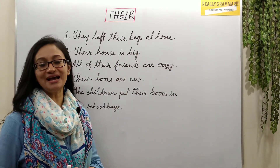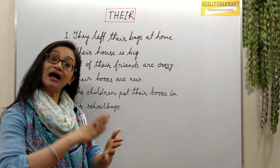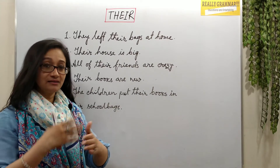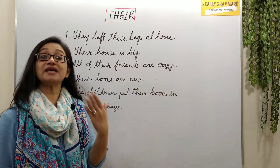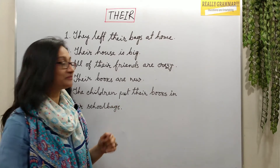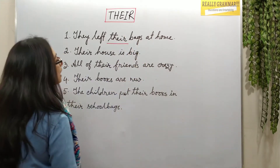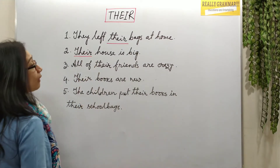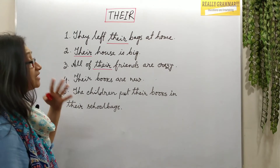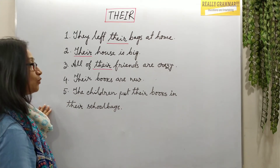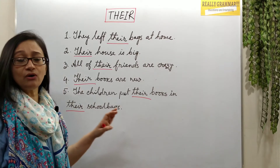Now, T-H-E-I-R — 'their' — is a possessive adjective used before a noun. Adjectives tell us more about the noun. 'Their' shows possession — that something belongs to them. Examples: 'They left their bags at home.' 'Their house is big.' 'All of their friends are crazy.' 'Their books are new.' 'The children put their books in their school bags.' All of these are about possession.